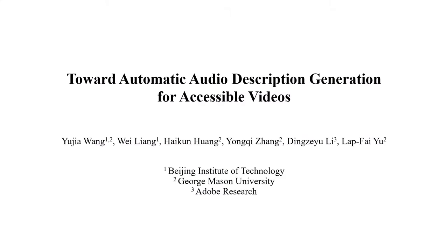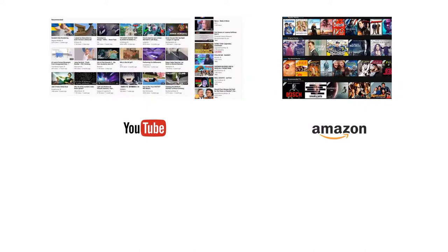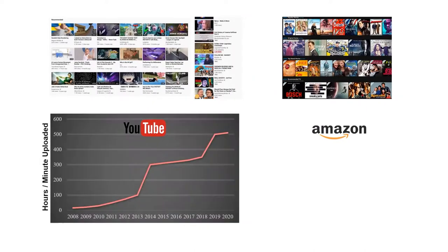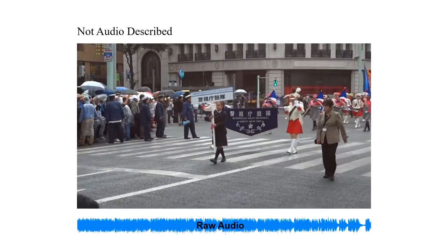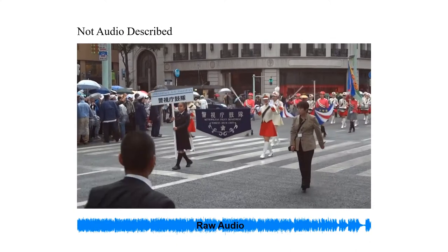Videos without audio descriptions are inaccessible to people who can't see them, as stated by the American Council of the Blind. Popular video streaming platforms like YouTube and Amazon Prime have millions of uploaded videos; however, very few videos have audio descriptions, which makes the sheer amount of video content inaccessible to users who are blind or vision impaired.